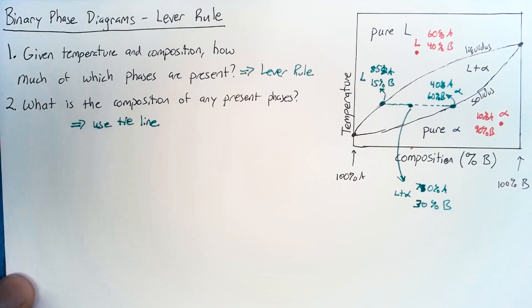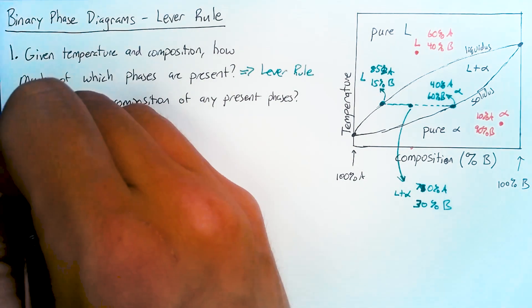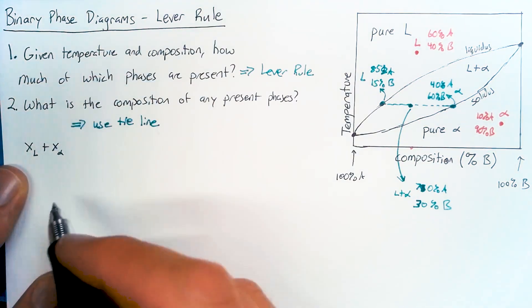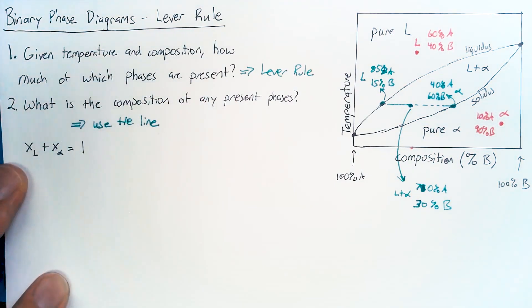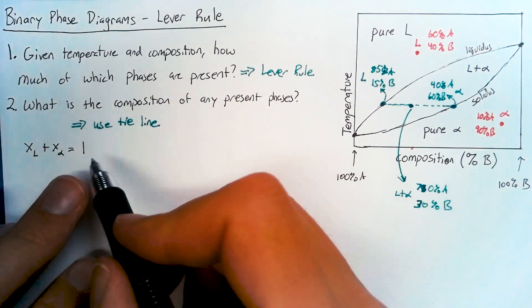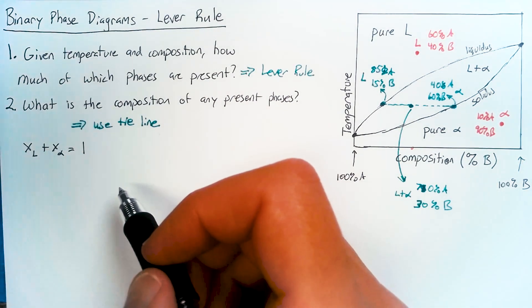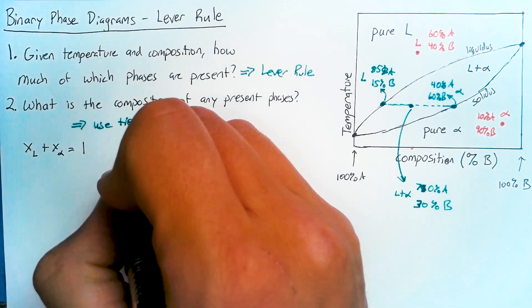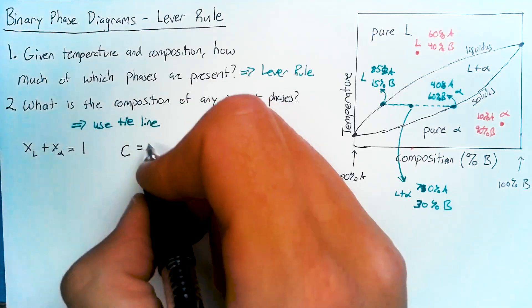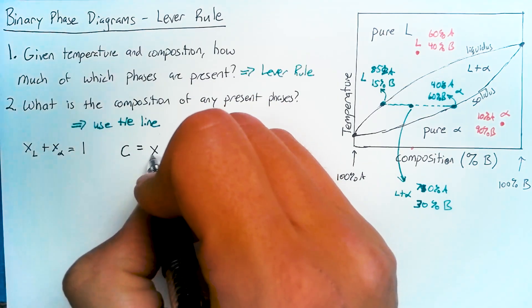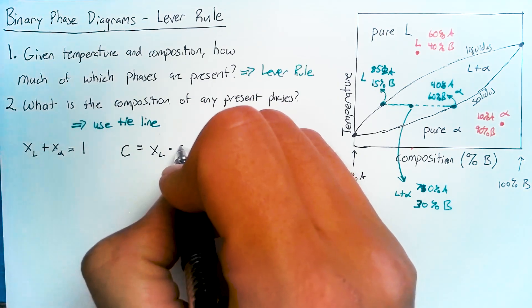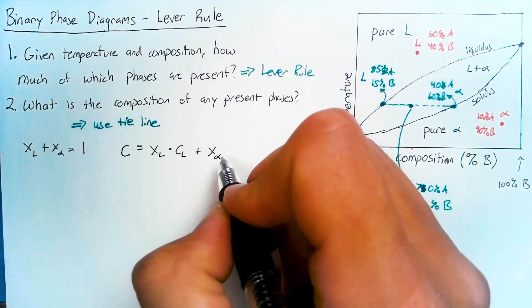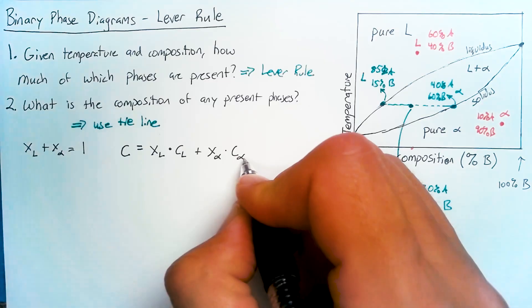The two equations we need are very simple. First off, the total of all of the added compositions has to equal one. Why? Because if we add all the pieces of our thing together, we'll get all of the thing, right? So this is 100%. The other thing that we'll use is that the overall composition is going to be equal to the percentage of liquid present multiplied by the composition of liquid plus the percentage of alpha present multiplied by the composition of alpha.